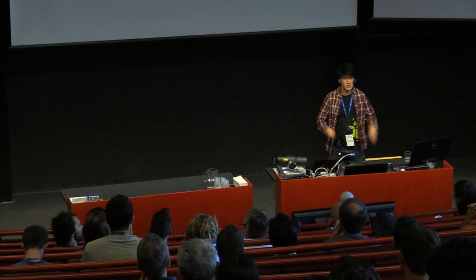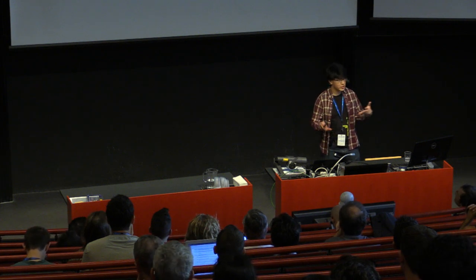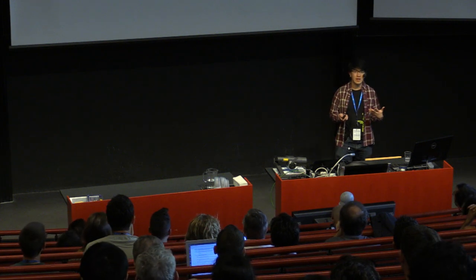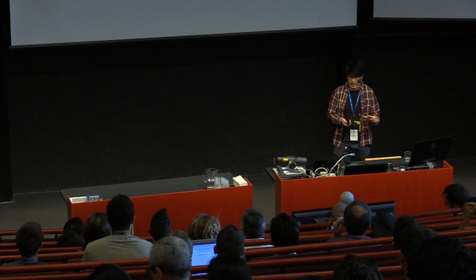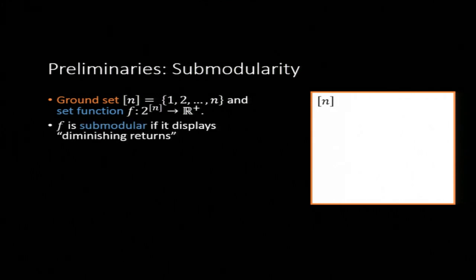All right, so first let's have a quick one-slider view of what submodularity is. The situation I want you to have in mind is that there's a ground set of n elements that we care about, and there's a function that maps subsets of these elements onto non-negative values. We're going to say that this function is submodular if it displays a very particular diminishing returns property.